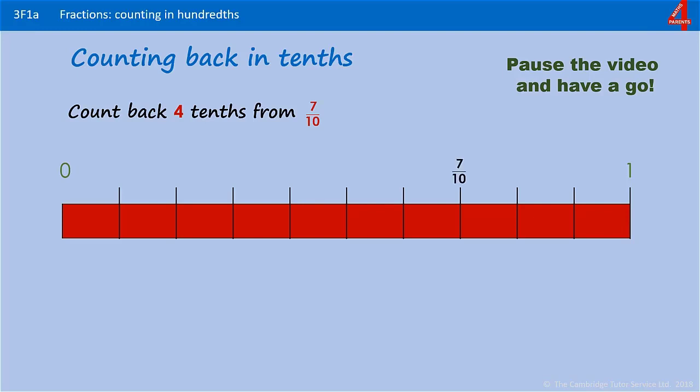This time, count back four tenths from seven tenths. Pause the video, have a go. Here's seven tenths on the number line. Count back one tenth, that's six tenths. Another tenth, that's five tenths, four tenths. Another tenth, that's four tenths. Another tenth: counting back four tenths from seven tenths takes you to three tenths.